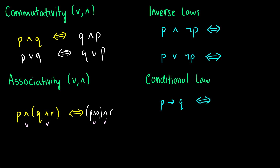The inverse laws: P∧¬P is a contradiction — this is false. P∨¬P is a tautology — this is true. We proved both of these in the last video.